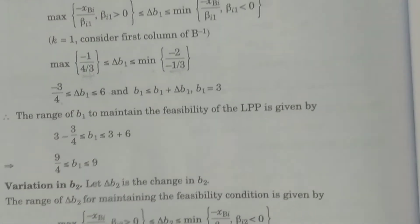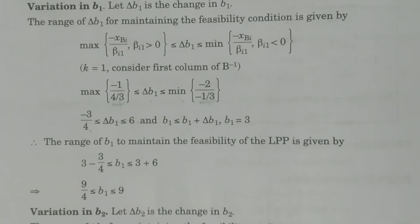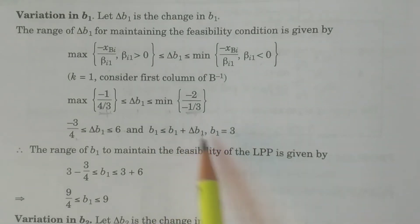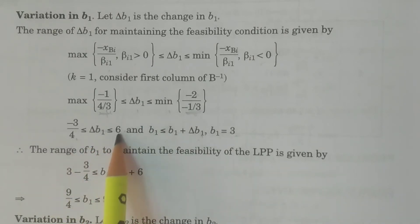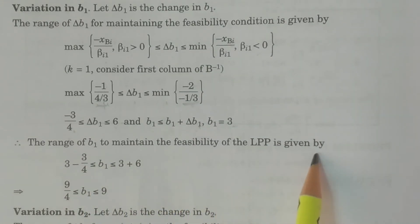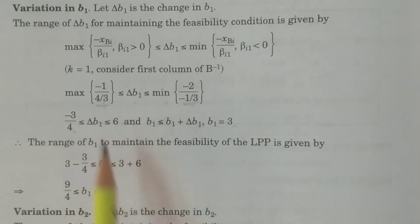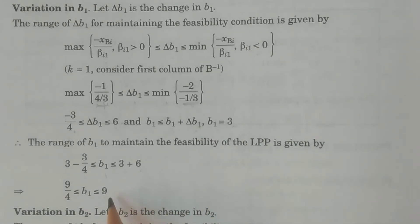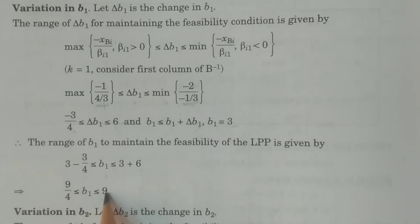You add simply 3 to the entire equation. Therefore the range of B1 to maintain the feasibility of the linear programming problem is given by: 3 - 3/4 ≤ B1 ≤ 3 + 6. That is 9/4 ≤ B1 ≤ 9. This is the range of B1 to maintain the feasibility. If you want to maintain the feasibility of the new linear programming problem, B1 lies between 9/4 and 9, so we can consider any value between 9/4 and 9.